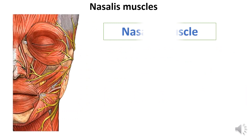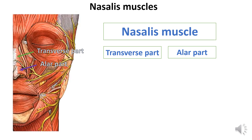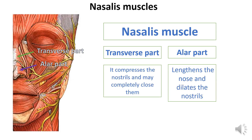The nasalis muscle consists of the transverse and alar parts. The transverse part starts from the upper jaw, higher and lateral to the upper incisors, goes upward and medially to the nasal bridge, where through a tendinous expansion it connects to the same muscle of the opposite side. The alar part starts lower and medial to the transverse part and attaches to the skin of the ala of the nose. The transverse part compresses the nostrils and may completely close them. The alar part widens the nose and dilates the nostrils.